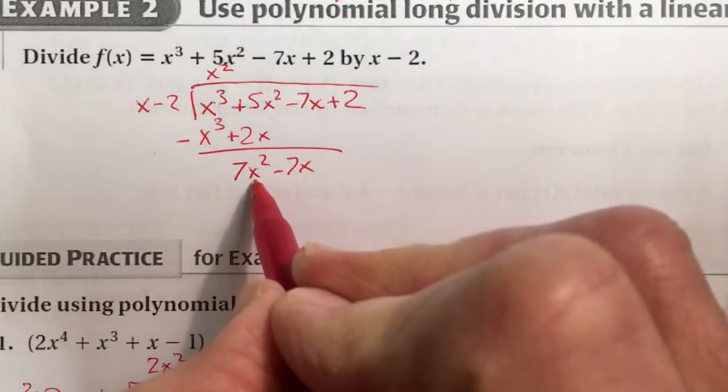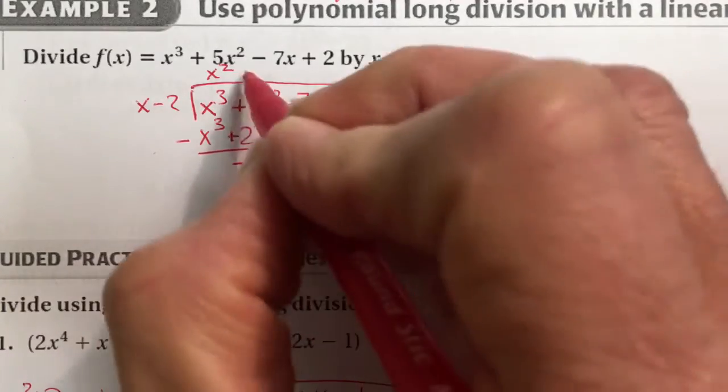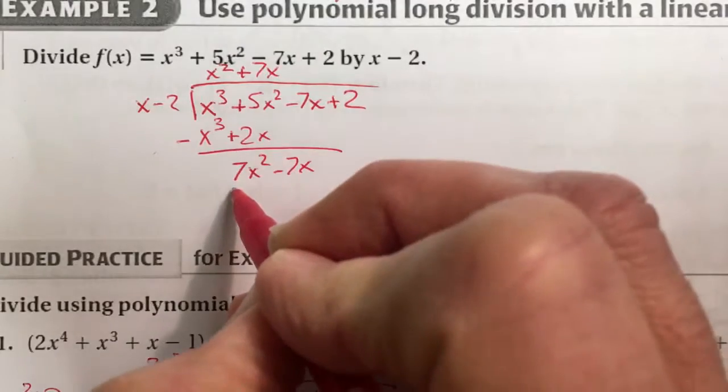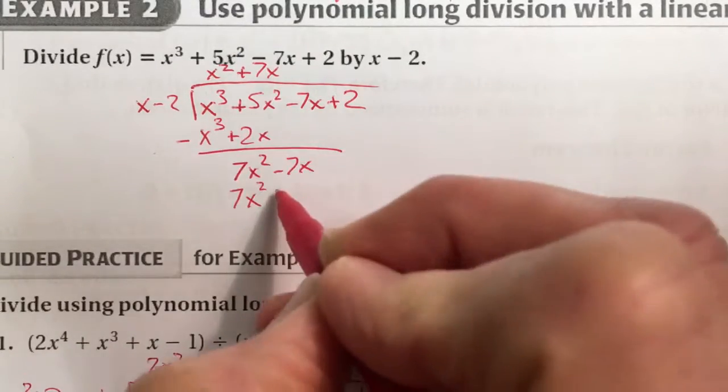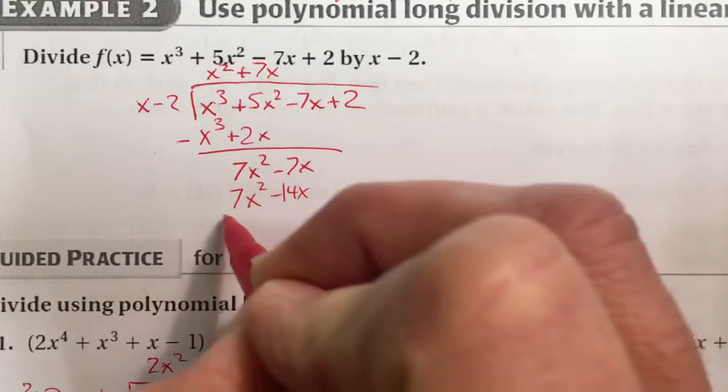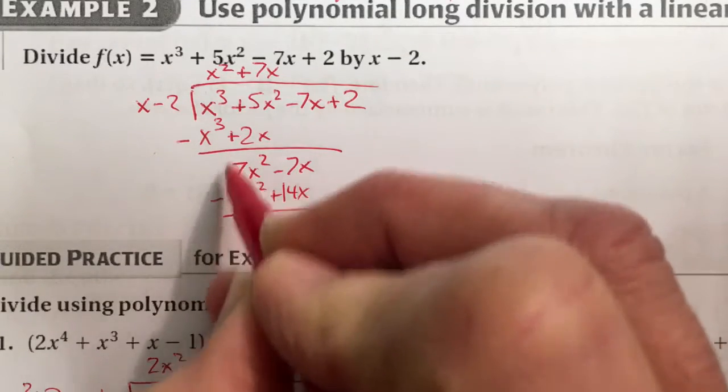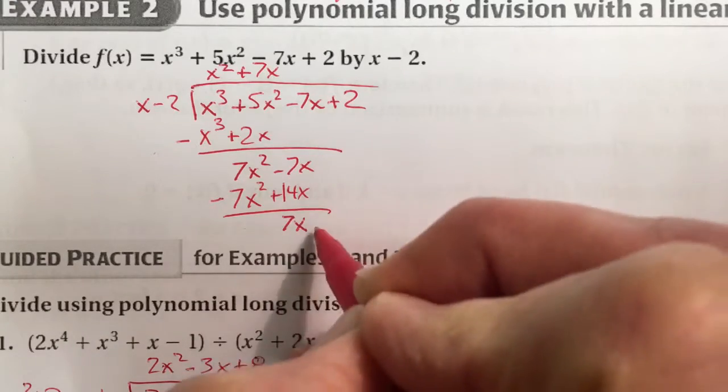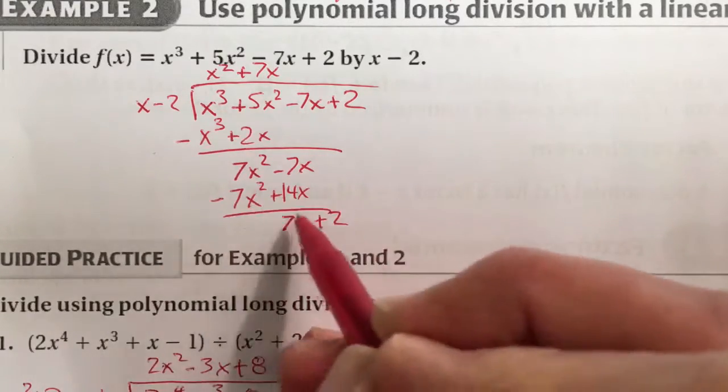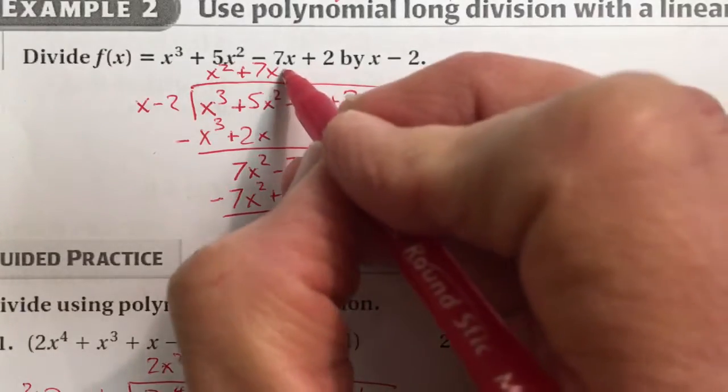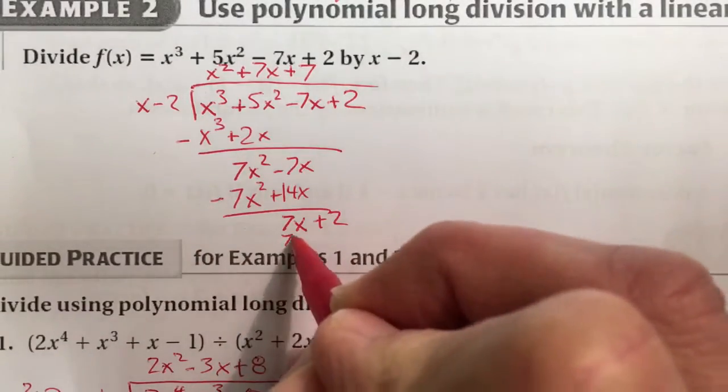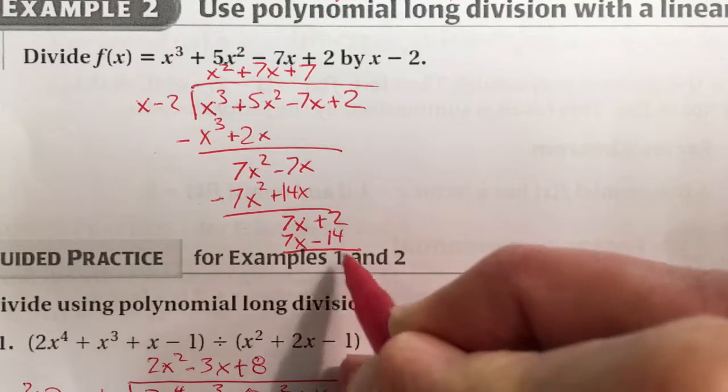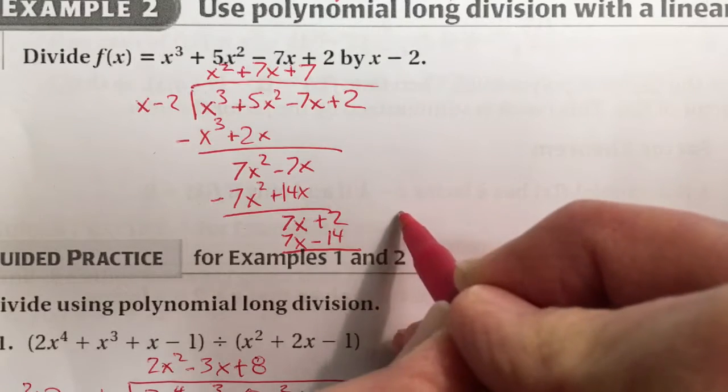So x into 7x^2 is 7x. So it's positive 7x. 7x times x is 7x^2, matches, and negative 14x. Change the signs. Gone. This becomes 7x. Bring down the 2. x into 7x, simply 7 times. We have 7x minus 14. So we just have a negative 12 as a remainder.